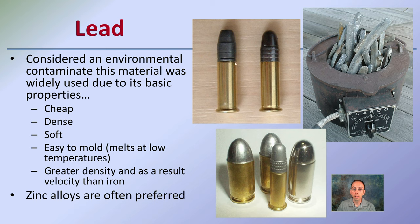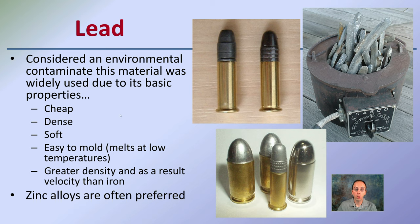These are all examples of lead bullets. Lead was widely used due to its ballistic properties — it's cheap, dense, and soft, and easy to mold because it melts at low temperatures. For example, wheel weights used to balance tires can be melted down and formed into bullets. However, lead is considered an environmental contaminant. Zinc alloys are now often preferred due to their reduced environmental contamination.